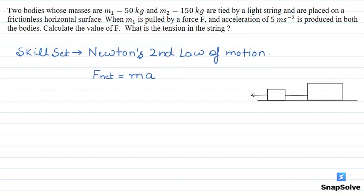The question says that two bodies whose masses are M1 equal to 50 kg and M2 equal to 150 kg are tied by a light string and are placed on a frictionless horizontal surface. When M1 is pulled by force F, an acceleration of 5 meter per second square is produced in both the bodies.